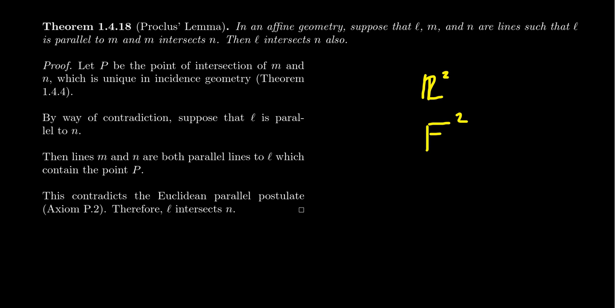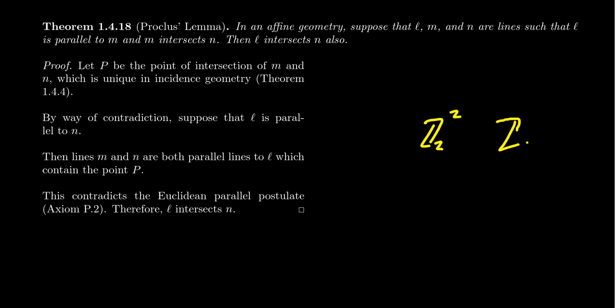In particular, if your field is a finite field, you can get finite affine geometries. Our four-point geometry results from taking the field of two elements and squaring it. Young's geometry can be given a coordinate system by taking the field of three elements and squaring it. Affine geometry can be found everywhere.